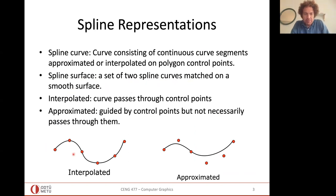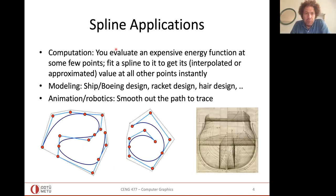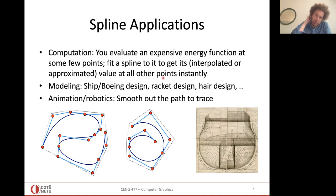When we discuss curves we generally talk about control points that guide the curve. The curve is interpolating if it passes through those control points, and approximating if it passes around them. Today we'll see both: interpolated curves (cubic splines) and approximated curves (Bezier curves). The motivation is that you evaluate an expensive function only at a few landmark points, fit a spline to those points, and then interpolate values anywhere along the spline by changing a single parameter.